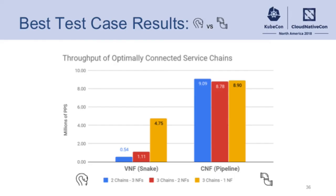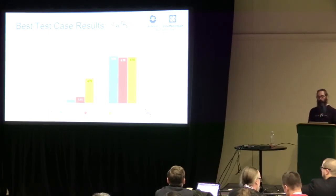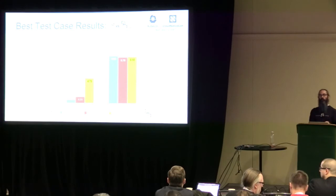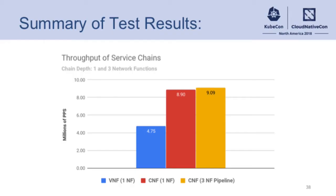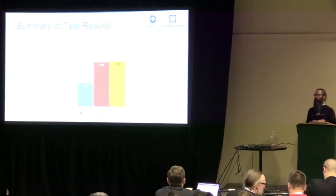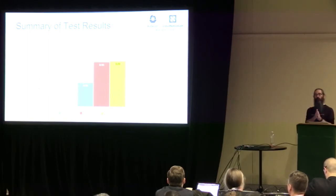What we're looking at here is a comparison: on the left-hand side, the snake case at half a million packets per second for VNFs with two chains and three network functions depth. On the pipeline side — the CNF pipeline direct connect — we have nine million packets per second, so over a 17x increase. This is across the board: once you're able to do pipelines and direct connections, the CNFs show much higher throughput. Best case for these tests: 4.75 million packets per second for VNFs, and you're showing an increase on CNFs for both the snake and the pipeline case.